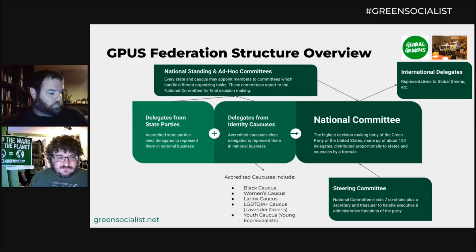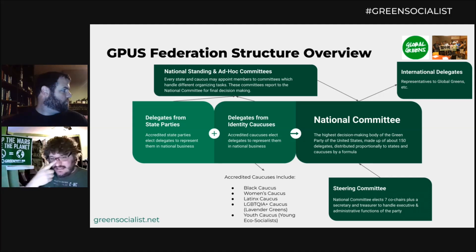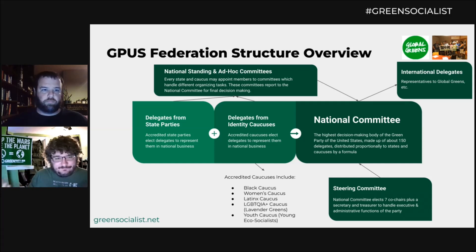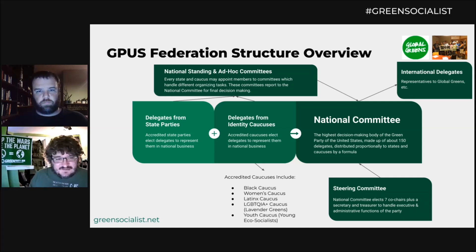They can give you resources and information about what Greens might live near you that you can contact, and information on how to start a local party and what all that entails. So you want to get involved with your local or state party, and then we have these identity caucuses — both of them elect delegates that go to our Green National Committee.